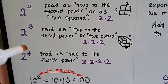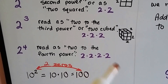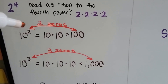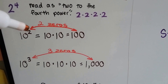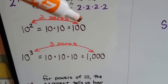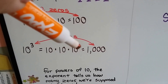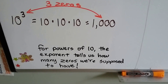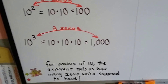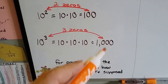2 with a little 4 exponent is read as 2 to the fourth power, and it means 2 times 2 times 2 times 2. When we see exponents of 10, 10 to the second power means 10 times 10 — that little 2 exponent tells us we're supposed to have two zeros. 10 to the third power tells us we're supposed to have three zeros. So for powers of 10, the exponent tells us how many zeros we're supposed to have. 10 to the eighth power means eight zeros; 10 to the sixth power means six zeros.